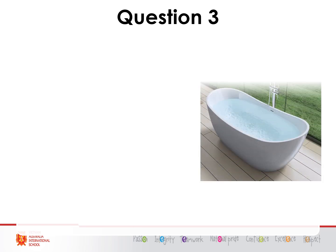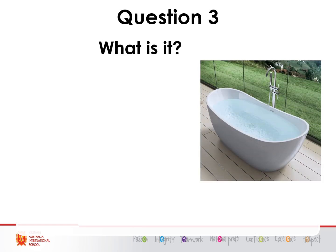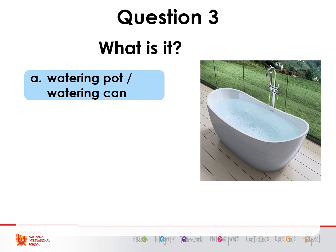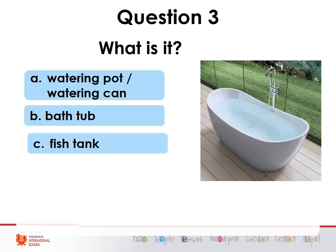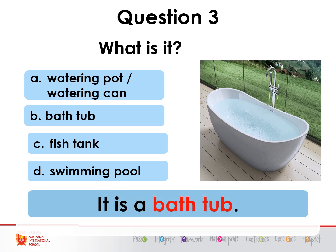Question three — what is it? A) a water bottle, B) a bathtub to have a bath, C) a fish tank for your fish, or D) a swimming pool to go for a swim. It looks a bit small for a swimming pool. Give you three seconds: three, two, one. That's right, it's a bathtub. Good job if you got that correct.